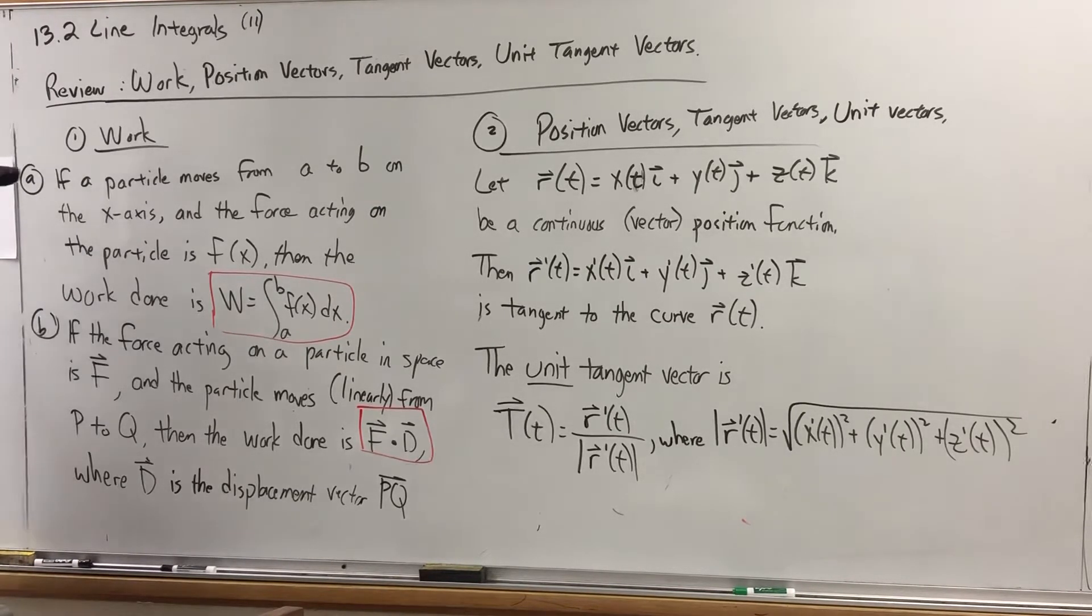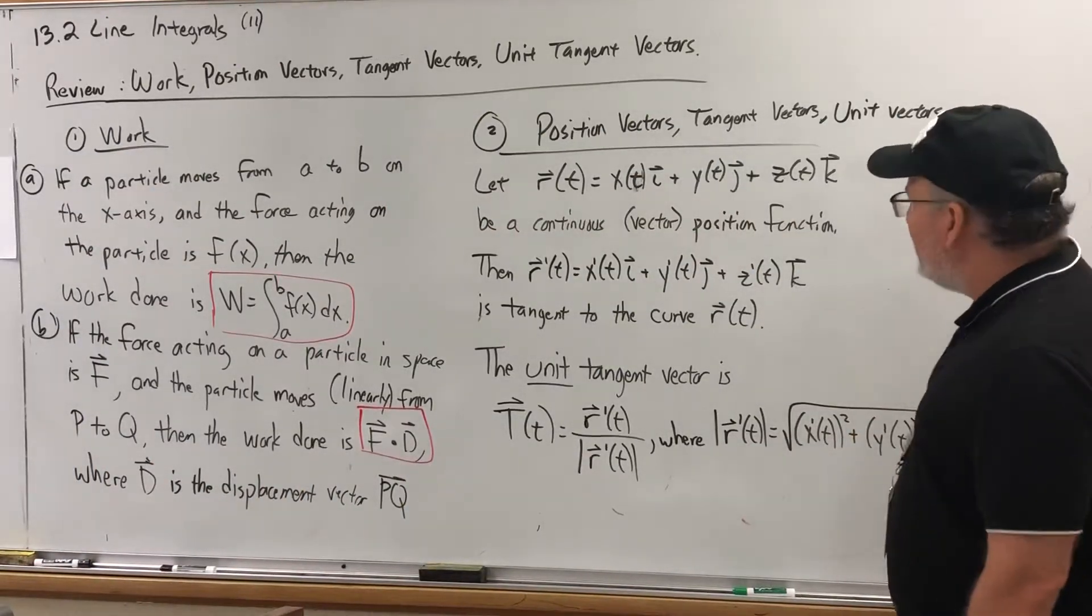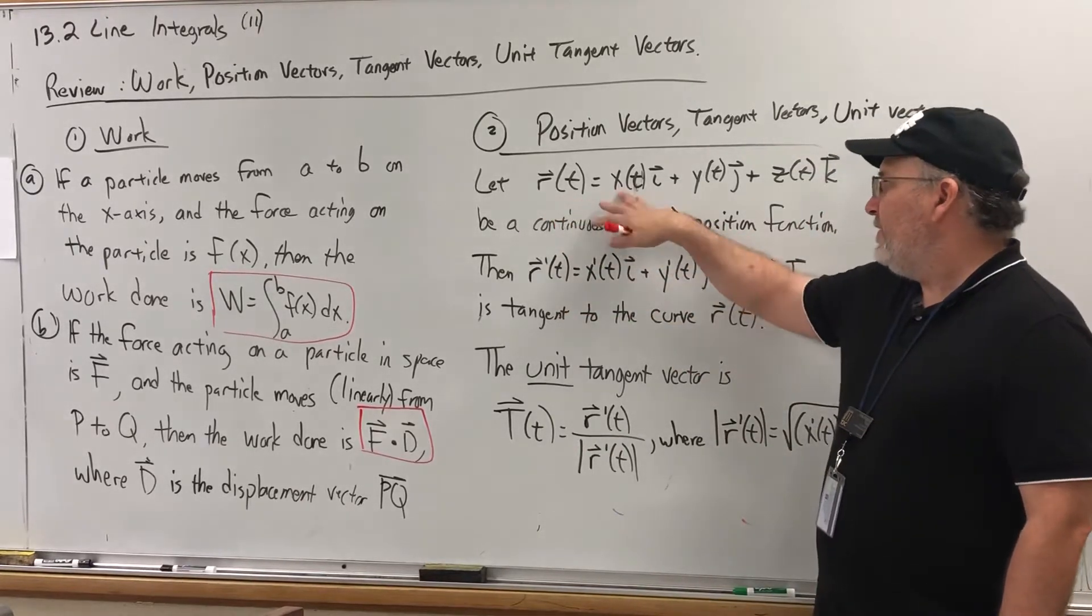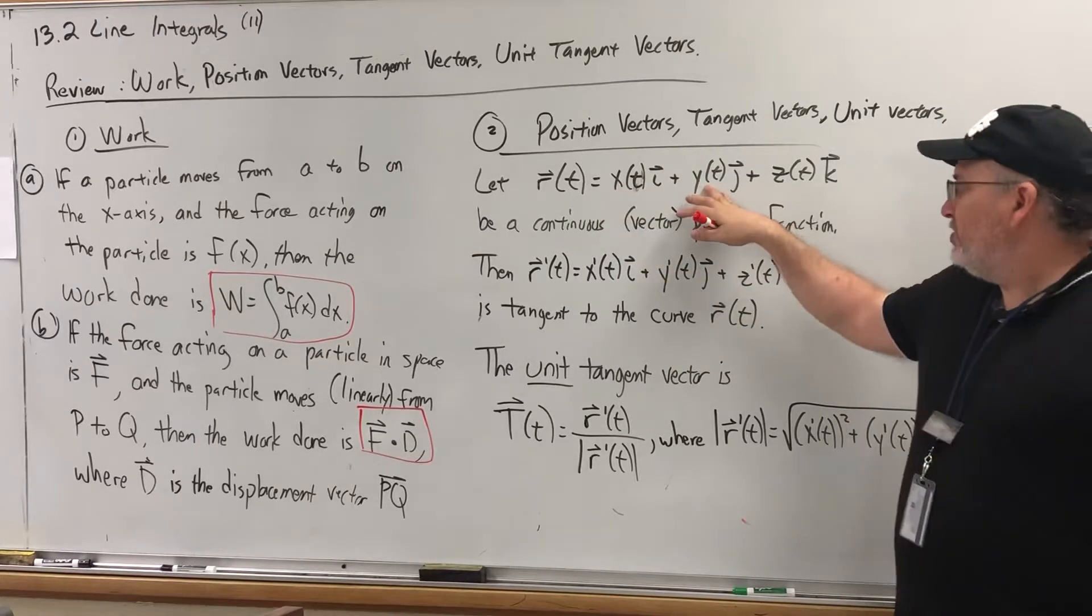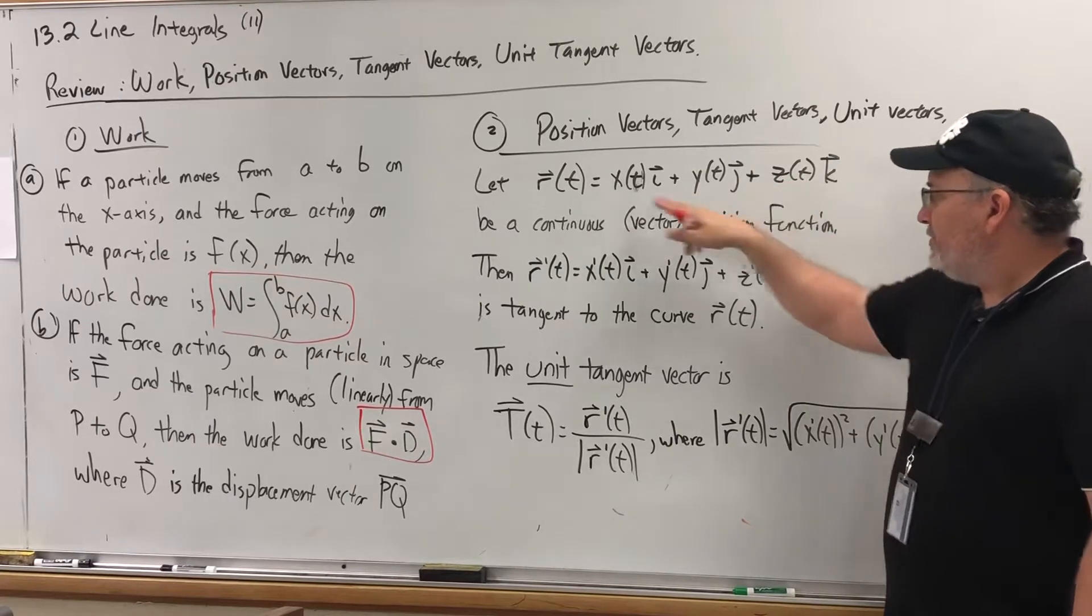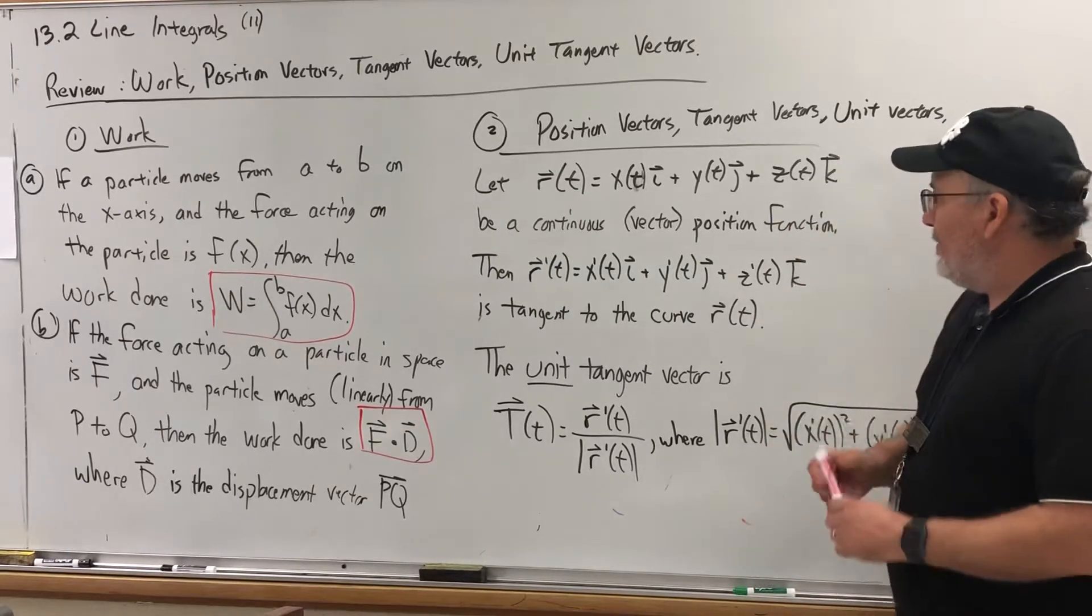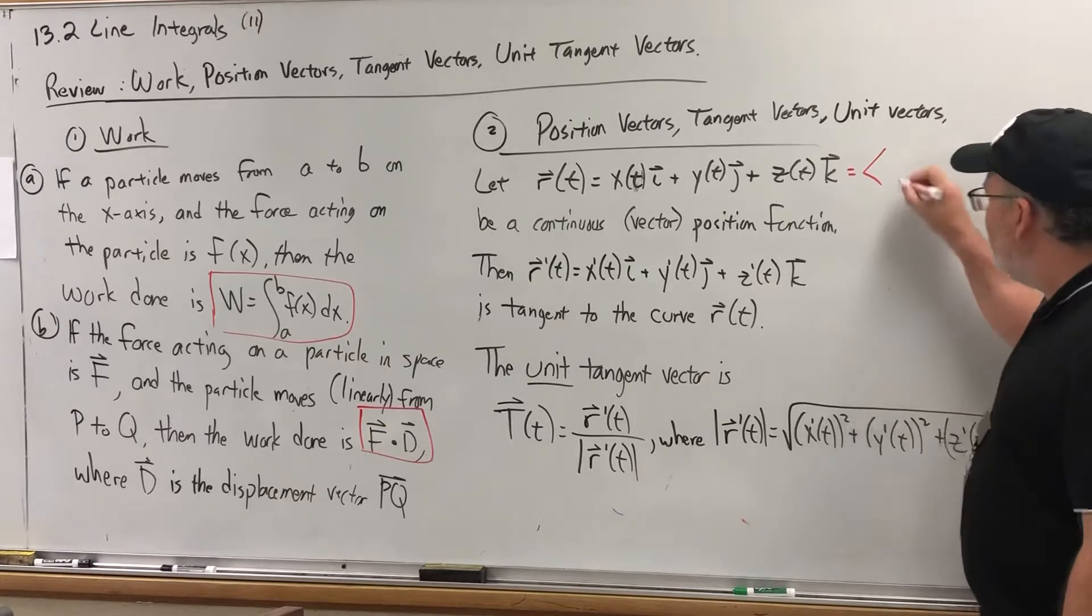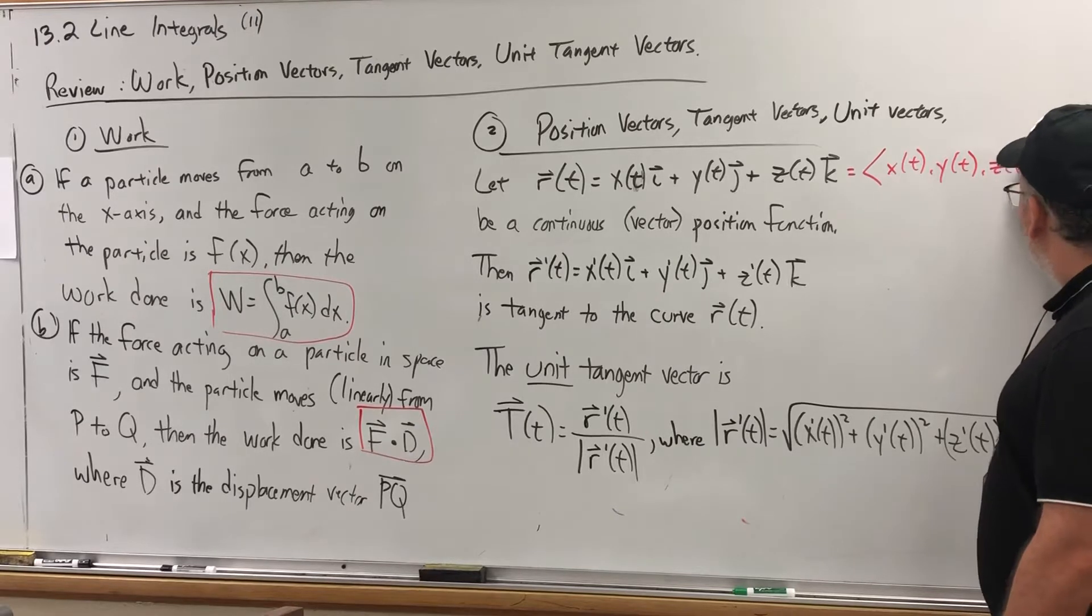And what we'll also be using are position vectors, tangent vectors, and unit vectors. Just recall that a position vector is a vector function that says, here's a function to tell you your i component, here's a function to tell you your j component, and here's a function to tell you your k component. So these would all be scalar functions because they take in a number and return a number, but collectively they make a vector function. You could also write this using vector notation: x(t), y(t), z(t).